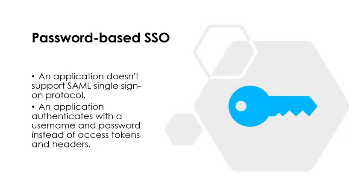Third is password-based SSO. Choose password-based when the application authenticates with a username and password. Password-based SSO enables secure application password storage and replay using a web browser extension or mobile app. This method uses the existing sign-in process provided by the application but enables an administrator to manage the passwords, and it can be used for both cloud and on-premises applications. If an application doesn't support SAML or OpenID Connect, then you can choose password-based SSO — the application authenticates with a username and password instead of an access token or headers.